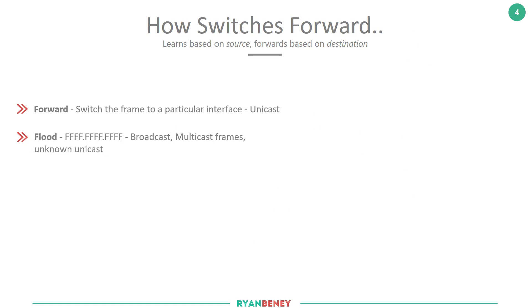Flooding is key to how a switch builds its CAM or MAC address table. As information is flooded to everyone on the switch, when the intended host responds — saying that traffic is for me — the switch sees the response come back in. Because it can see the response, it sees the source generating the traffic, and since switches learn based on source addresses, it's able to populate the table from that response.